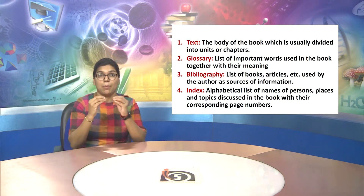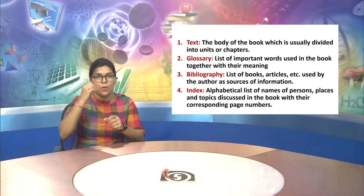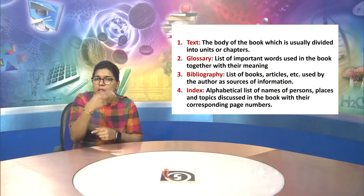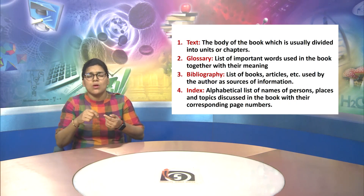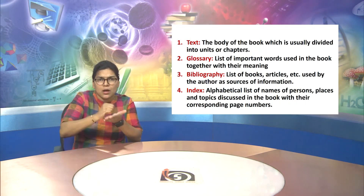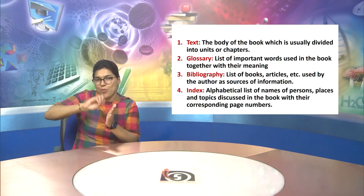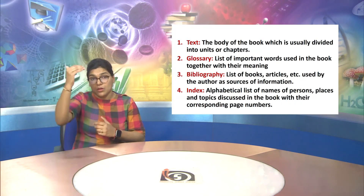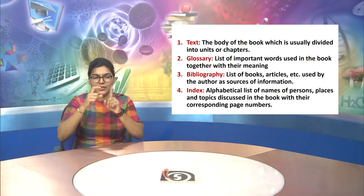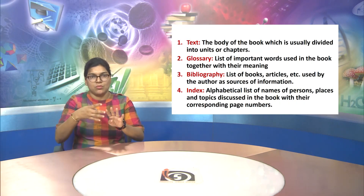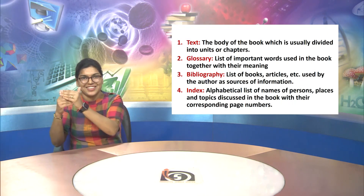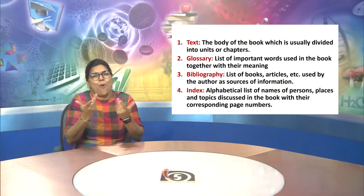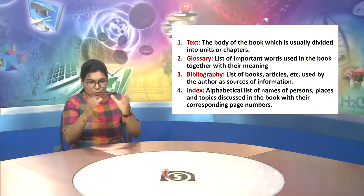Point 3 is the Bibliography: a list of books, articles, etc. used by the author as sources of information. Point 4 is the Index: an alphabetical list of names of persons, places and topics discussed in the book with their corresponding page numbers.